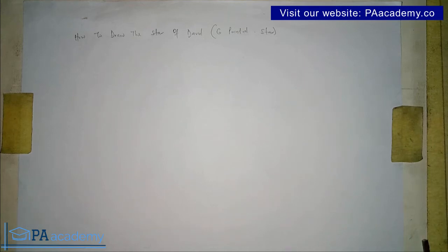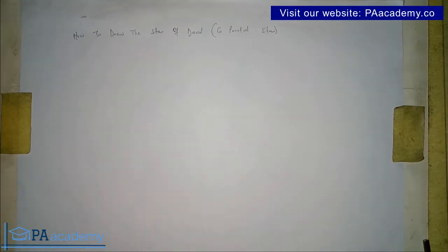Hello and welcome to PA Academy. In this video I'm going to show you how to draw the star of David. The star of David is the same as drawing a six-pointed star. So for us to draw a six-pointed star, one thing we are going to need is to draw a hexagon.